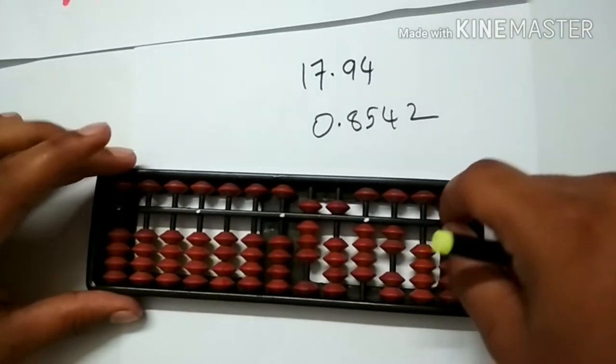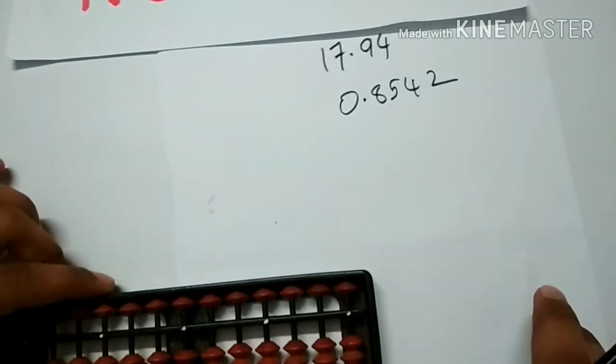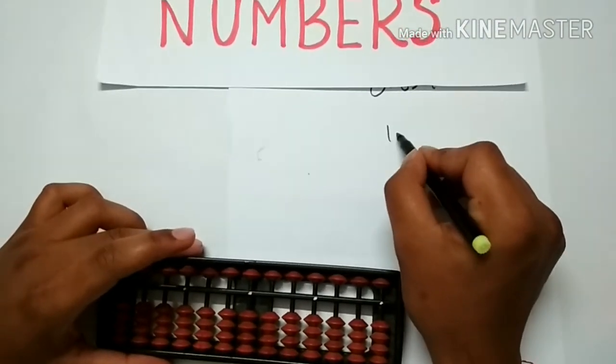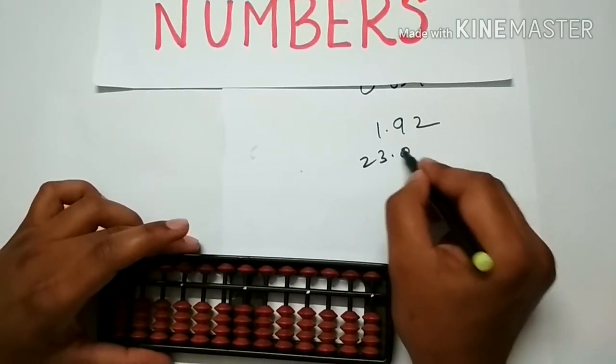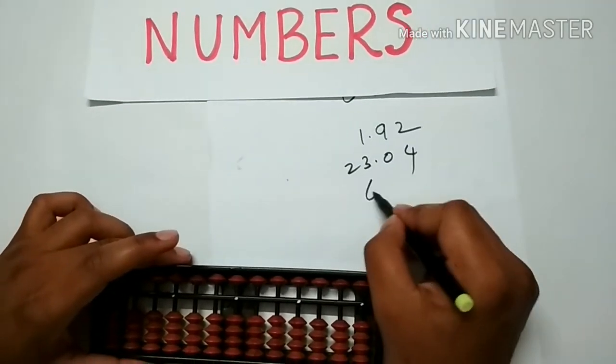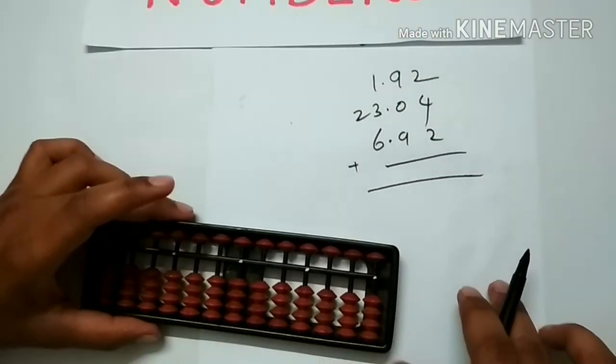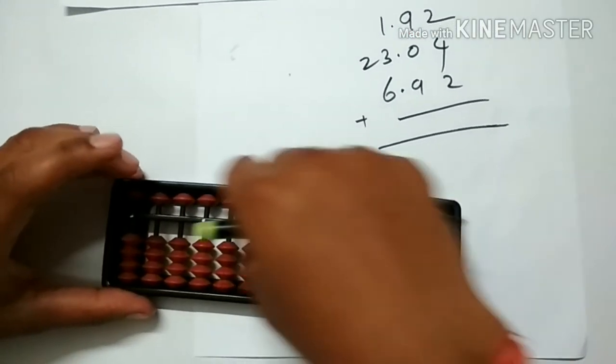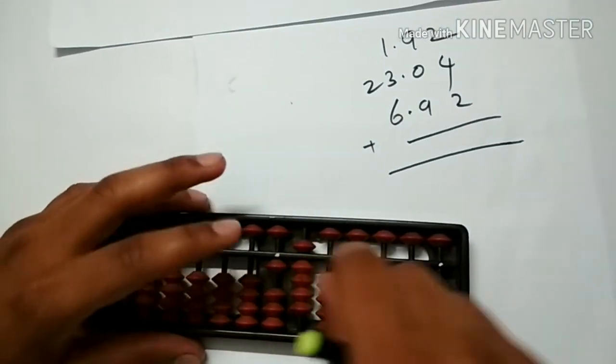Now let us try to add some decimal numbers using abacus. Let us take an example: 1.92, 23.04, 6.92. First things first, place 1.92 on the abacus. 1.92.